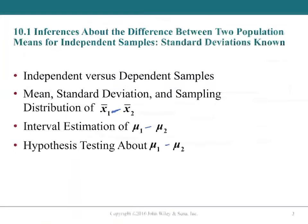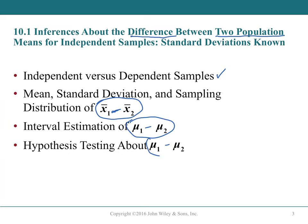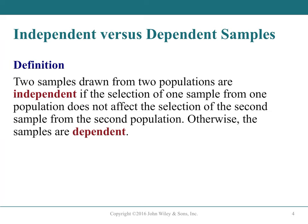Section 10.1 is a continuation of chapter 9, but now with two populations. We examine whether the two population means are close together or far apart, or whether one is greater than the other. We'll cover independence versus dependent samples, the sampling distribution of x̄₁ - x̄₂, interval estimation, and hypothesis testing about the difference in population means.